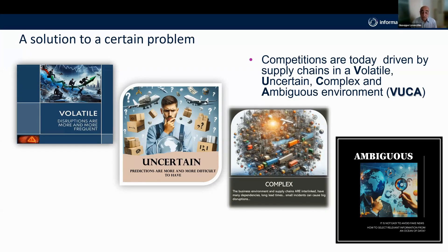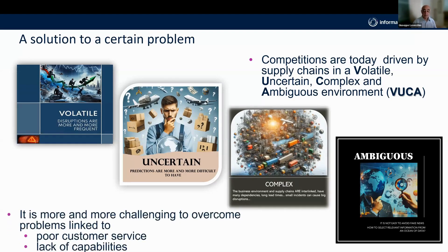Ambiguous because we don't have the capability to understand the right news and the right information — there is a lot of fake news. It is difficult to select relevant information from an ocean of data. Given this reality, there is a big challenge for our job in the supply chain and logistics fields: reaching great customer service levels, a lack of capabilities in managing this situation, and operational costs that are exploding.